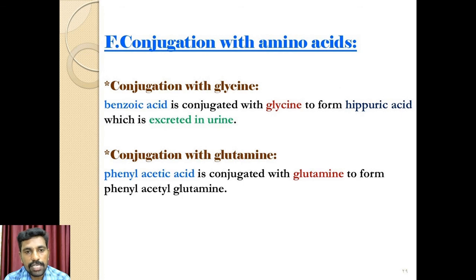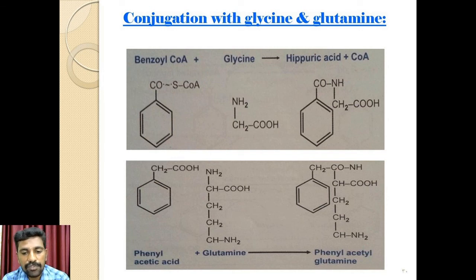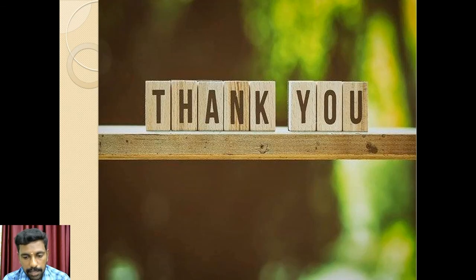The 6th reaction is conjugation with amino acids. Xenobiotics are conjugated with amino acids like glycine, glutamine, etc. For example, benzoyl-CoA plus glycine forms hippuric acid and CoA. Another example: phenylacetic acid is conjugated with glutamine to form phenylacetylglutamine. These are all the Phase 2 reactions. Thank you.